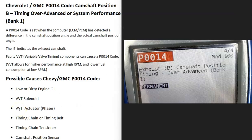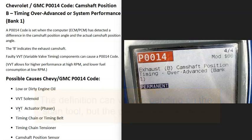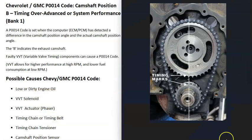If you have a Chevrolet or GMC with the P0014 code, I'll go over the causes and how to fix it. The P0014 code stands for camshaft position B timing over-advanced or system performance, bank one.